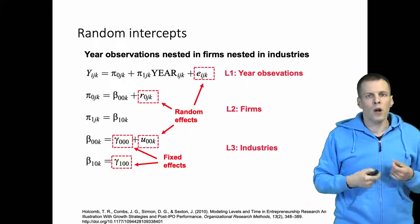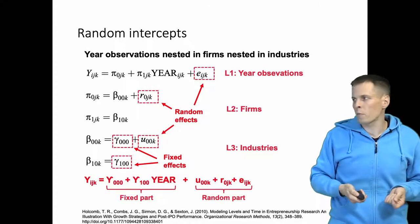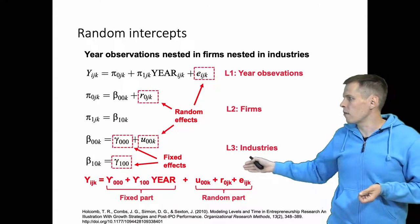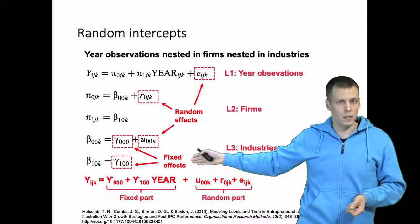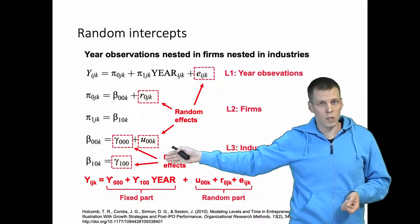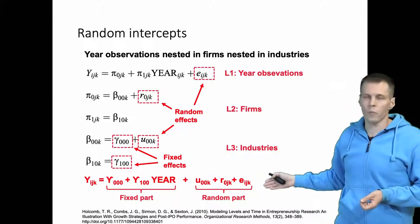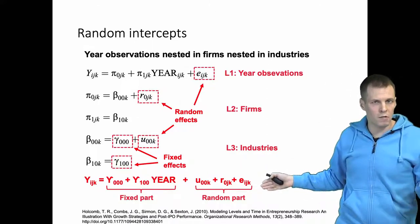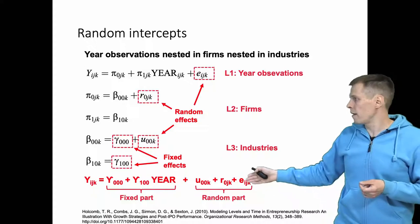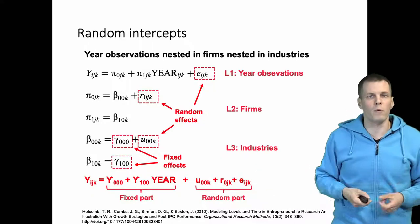If we write this equation into the mixed format, we can see that we have the fixed part that contains the grand intercept, the slope and the year, and we have the random part which contains the random intercept for the industry level, from the firm level, and then also the error term of the model.